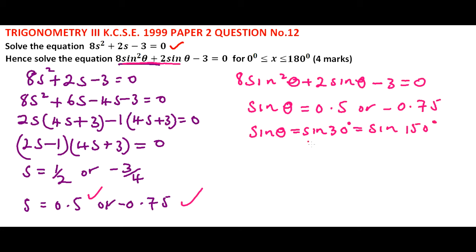This means θ = 30° or 150° as a second value. So we have 150°.